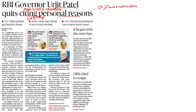Then came the most important point: Section 7 of the RBI Act. This particular section is one where the government would be able to enforce its stance on the RBI. The RBI is completely independent and has its own autonomy to function independently. But the minute Section 7 is enforced, the government would be able to dictate terms to the RBI, which basically means the RBI is moving away from its independence and the government is pushing its agenda.